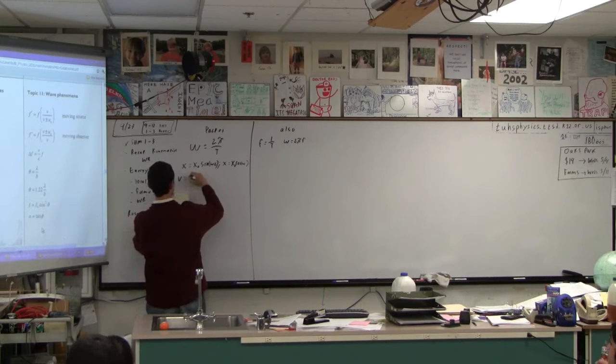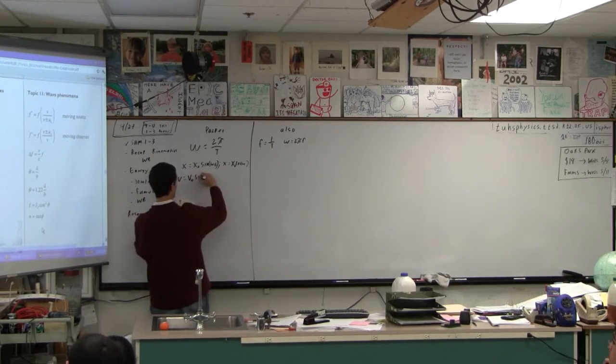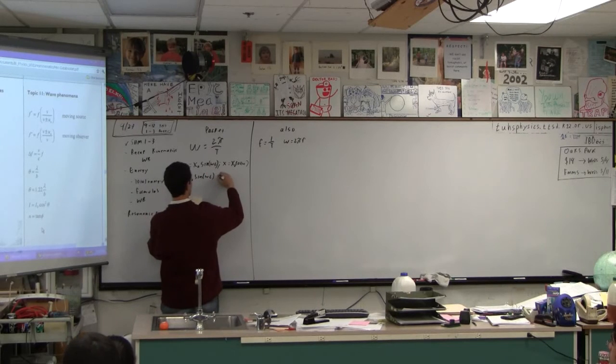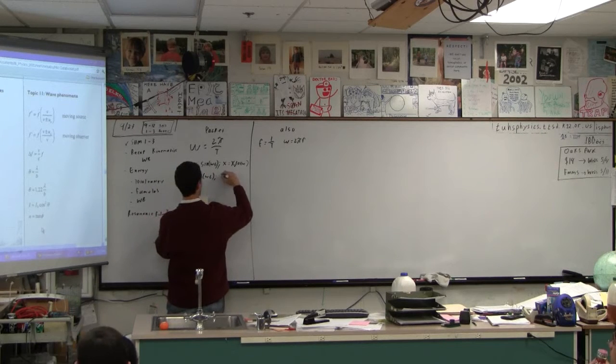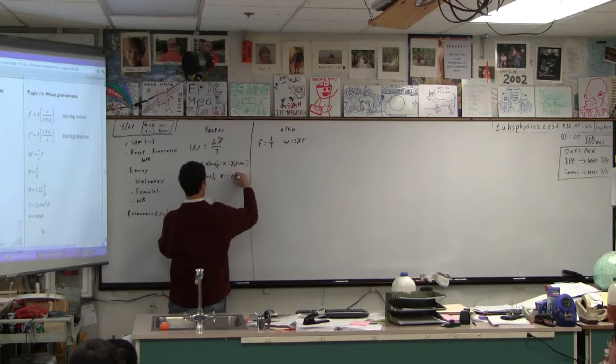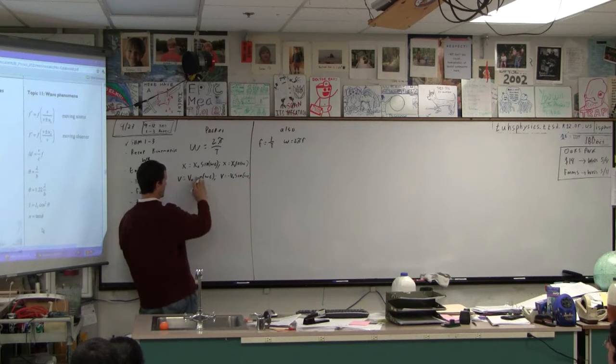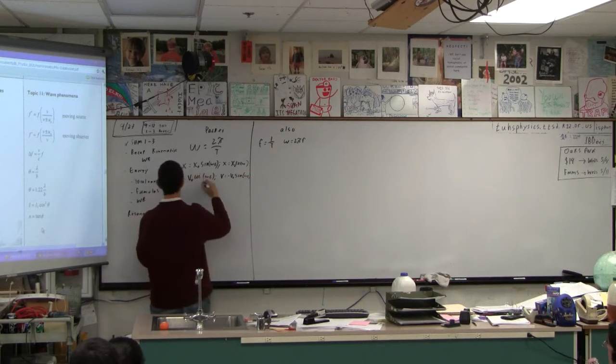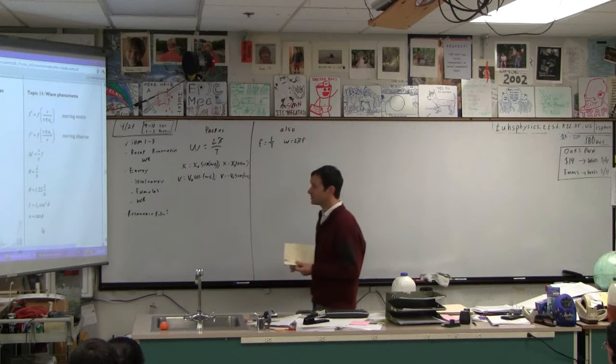And then the velocity is the maximum velocity times sine omega t. Or the velocity is negative maximum velocity times sine omega t. Oops, one of these has got to be cosine. Isn't that what it says? Yeah, there it is.